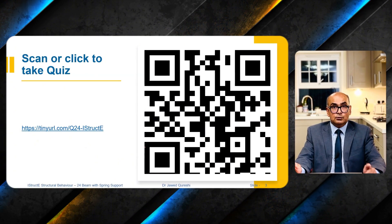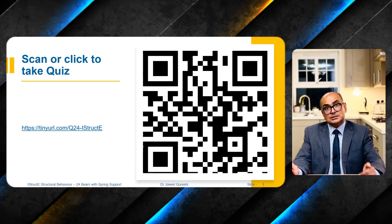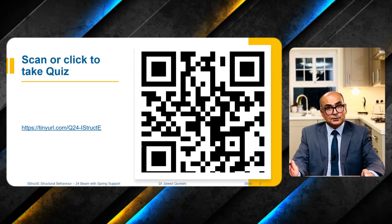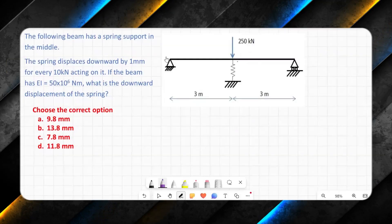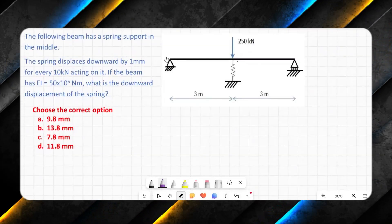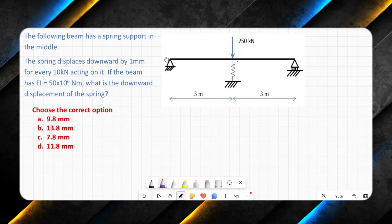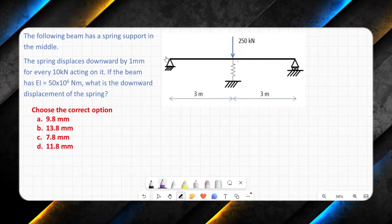If you want to try this question first before watching this tutorial, scan this barcode or go to this link. It will be in the description as well. Pause this video now and solve the question. In this example, I want to find out deflection of beam on its own and deflection of spring on its own.